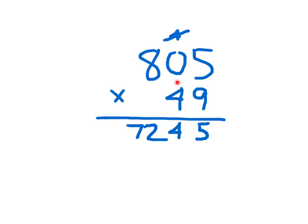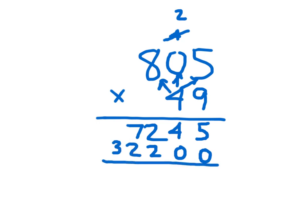Working with this 4 which is worth 40 — that's why we place a 0. Then step by step: 4 times 5 which is 20 — place the 0 and regroup the 2. Then 4 times 0 which is 0, plus 2 which is 2. And 4 times 8 which is 32. Add those numbers together, making sure digits are nicely lined up, and place your comma. 805 times 49 equals 39,445.